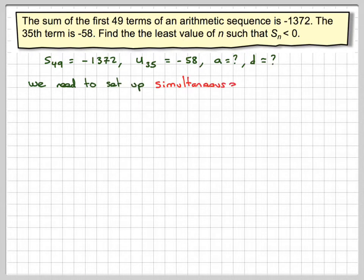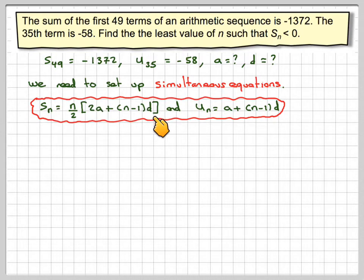So we need to set up simultaneous equations because we've got 2 unknowns. We use that Sn is n over 2, 2A plus n minus 1 times D, and that Un is A plus n minus 1 times D.